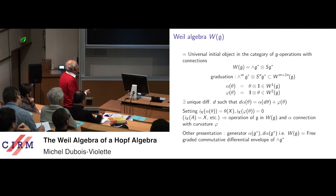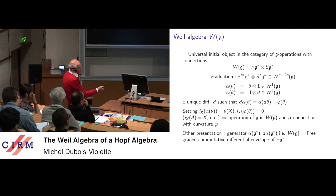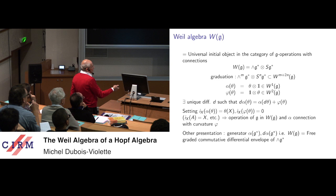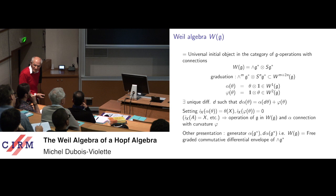There is another presentation by change of generators: the differential algebra is generated in degree 1 by alpha(G) and in degree 2 by the differential of alpha(G). From this it is clear that the algebra has no cohomology. One can say that the Weil algebra is the free graded commutative differential envelope of the exterior algebra. I will define free differential envelopes of graded algebras in general; here it is for the graded commutative case.